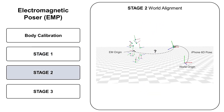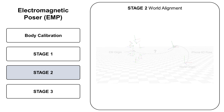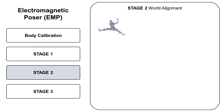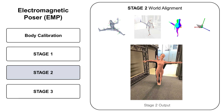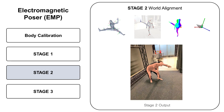In the second stage, we align the SMPL fit with the world, which we define to be the tracking space of the handheld mobile phone. This stage takes as input the outputs of the first stage, EM measurements, 2D keypoints, depth, and self-localized camera poses, and produces world-aligned SMPL pose and shape estimates.